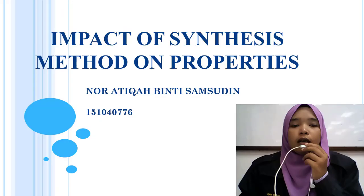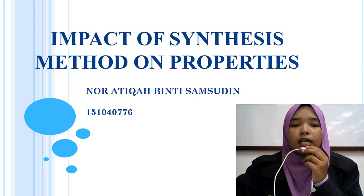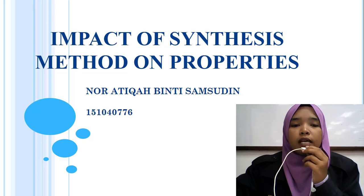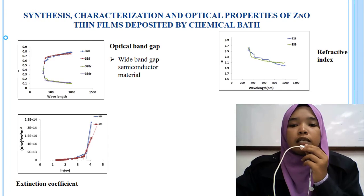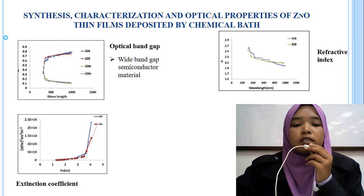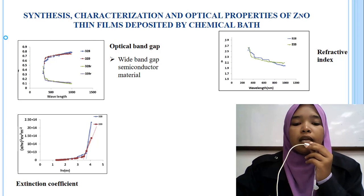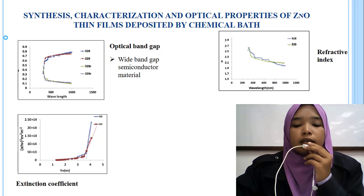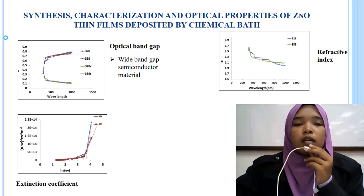Assalamualaikum and good morning. I am Noor Atikah. Today I will present on the impact of synthesis method on the thermal and electrical properties of zinc oxide. ZnO is a wide band gap semiconductor material with many applications, including as a transparent electrode. For the optical band gap, the figure shows the optical transmittance, reflectance, and absorption curves of deposited zinc films of two thicknesses. For the refractive index, the figure shows it as a function of wavelength. Electromagnetic radiation effects are observed, and the extinction coefficient value is derived from the electrical properties of the thin film. When the extinction coefficient decreases, the film thickness increases.